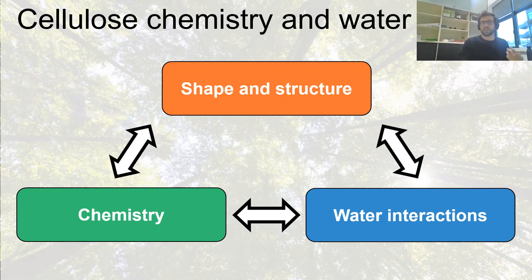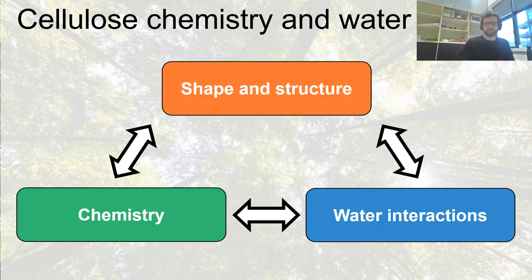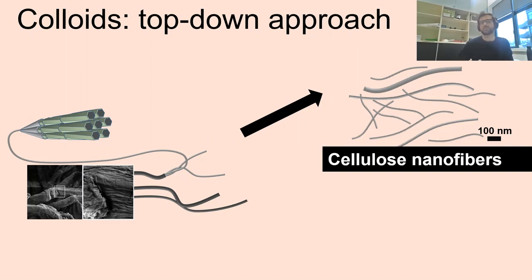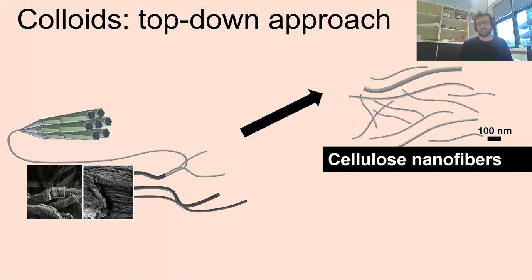Let's think about the structure and shape of cellulose. The cellulose fiber is a hierarchical structure: we have a big fiber composed of individual microfibril bundles, which are again composed of polymer chains. One very easy way to obtain nanocellulose is mechanical treatment — if you fibrillate the fiber, you obtain cellulose nanofibers. This is a top-down approach. Similarly, nanocrystals are obtained by acidic treatment, also top-down. This is very different from normal polymer chemistry, which is typically a bottom-up approach starting from a monomer.